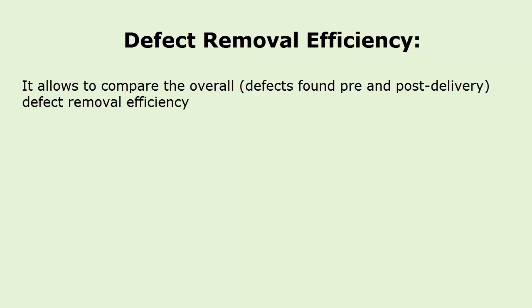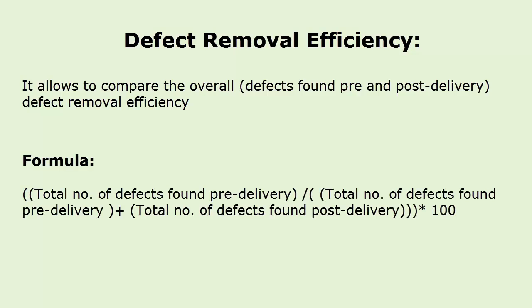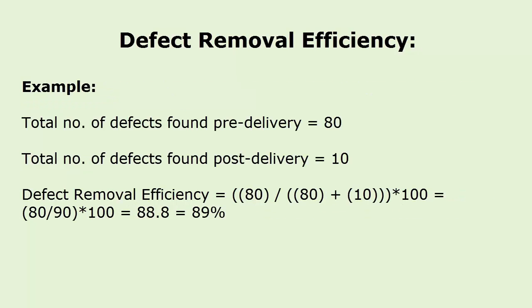Defect removal efficiency: it allows you to compare the overall defect removal efficiency. The formula is: total number of defects found pre-delivery divided by (total number of defects found pre-delivery plus total number of defects found post-delivery), multiplied by 100. Here goes an example on defect removal efficiency matrix.